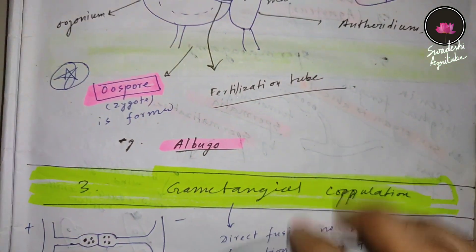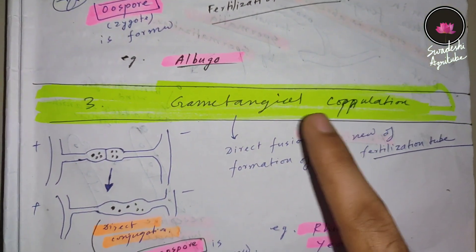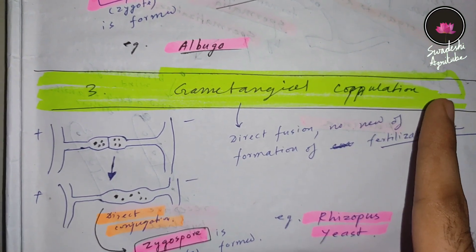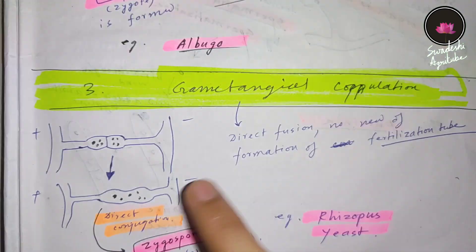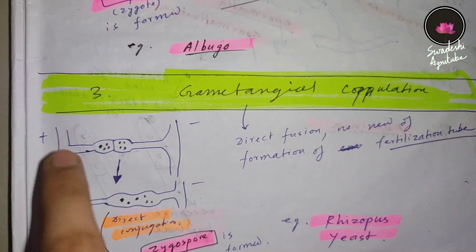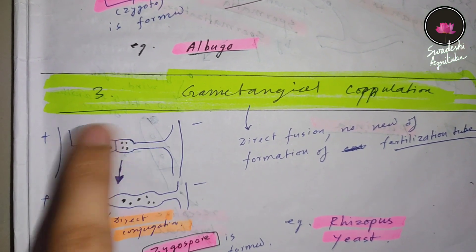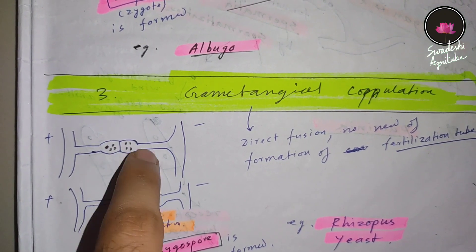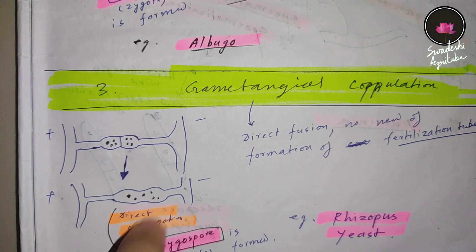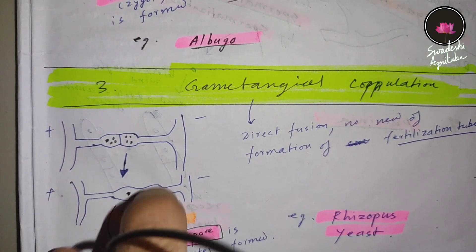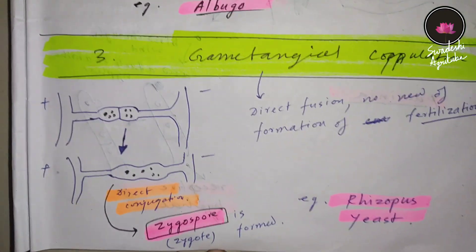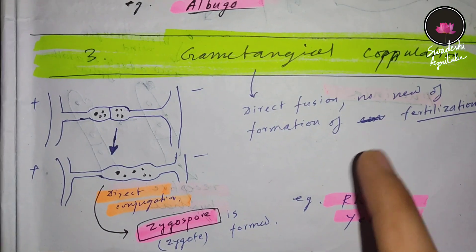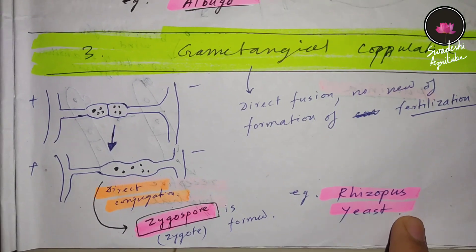The third type is gametangial copulation. The key difference from gametangial contact is that no fertilization tube is formed here. Instead, direct conjugation happens. You can see plus and minus mating type hyphae — they are opposite mating types. The protoplasm is fused by direct conjugation, the nuclei fuse, and a zygote is produced. That zygote is called a zygospore. So zygospore is produced by gametangial copulation, and the example is Rhizopus.